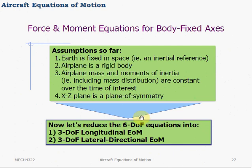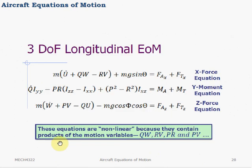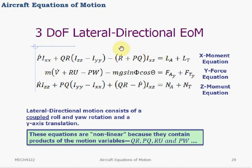The four assumptions were: the earth is fixed in space, the airplane is a rigid body, the airplane's mass and moments of inertia are constant, and the XZ plane is a plane of symmetry. With these assumptions, we can reduce the 6 degree of freedom equations into a 3 degree of freedom longitudinal equation of motion and a 3 degree of freedom lateral-directional equation of motion. The longitudinal equation covers the x-force, z-force, and y-moment (pitching). The lateral-directional equation covers the x-moment, y-force, and z-moment, consisting of coupled roll and yaw rotations as well as the y-force.